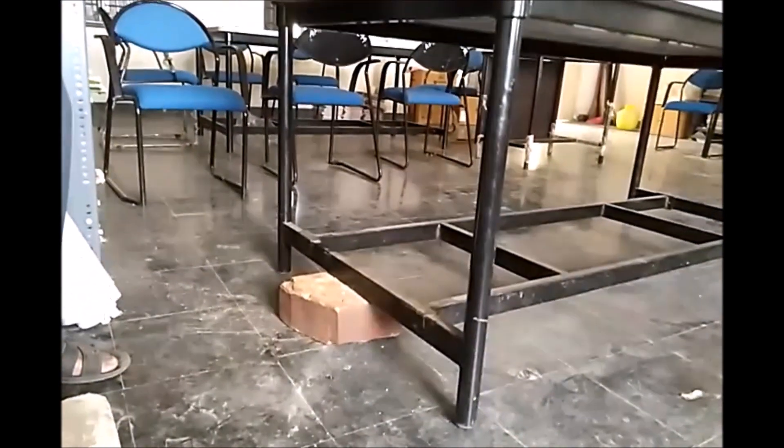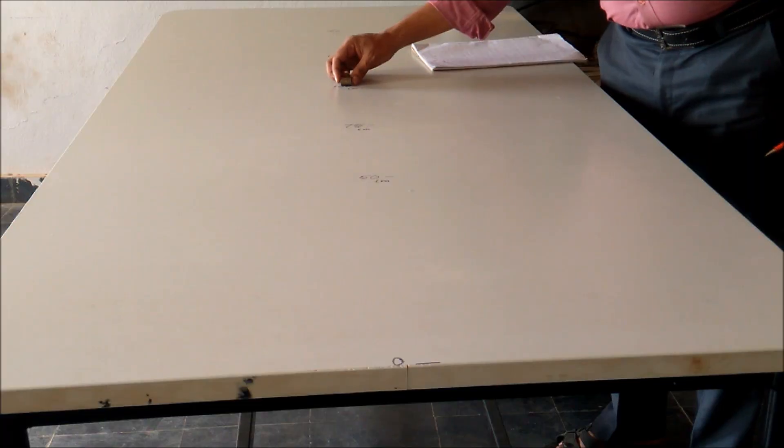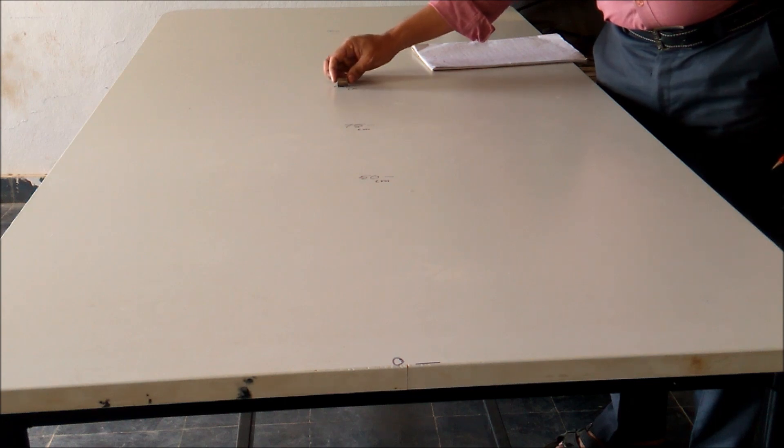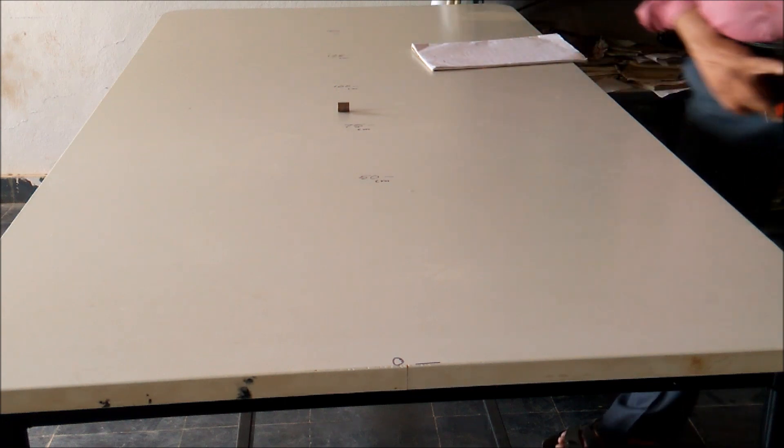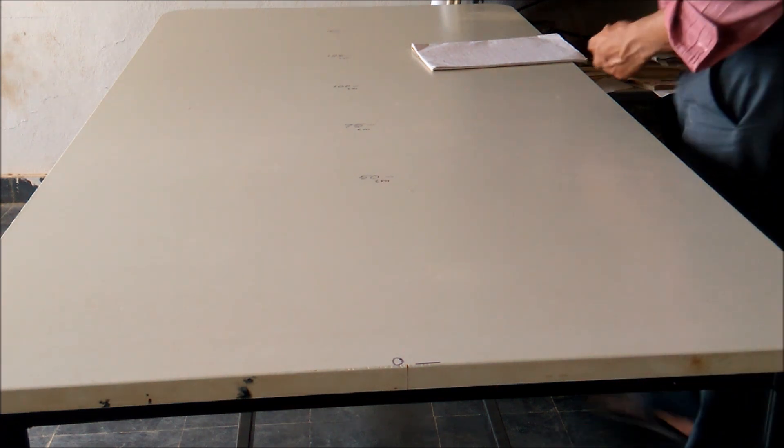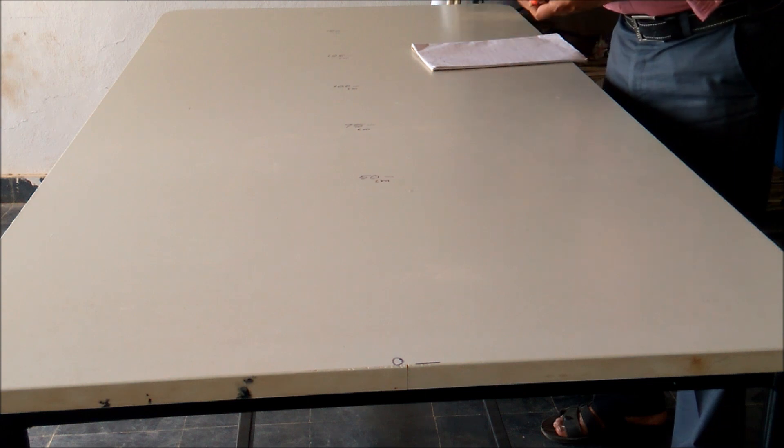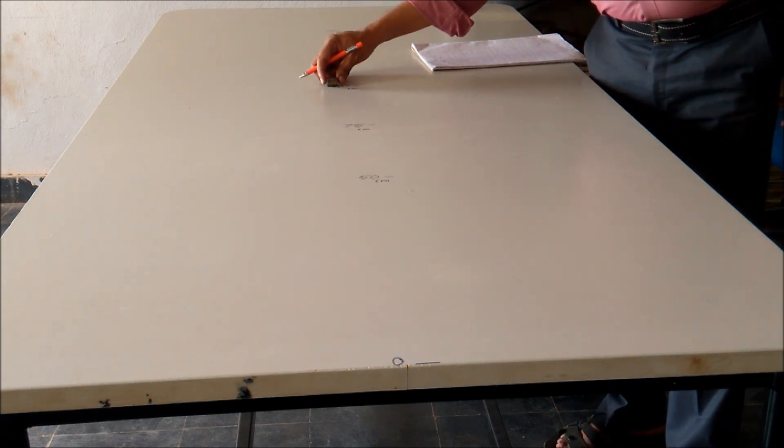By adding some mass under the experimental bench, you can convert it into an inclined plane. So the bench itself is an inclined plane here. From the 100 cm mark, I am releasing a small cylinder and noting the time taken with the help of a mobile stopwatch.